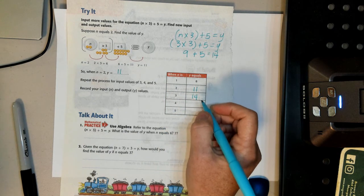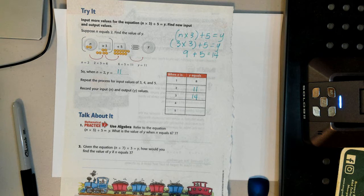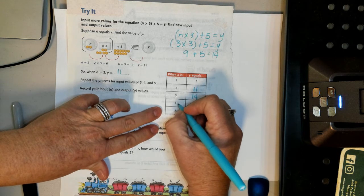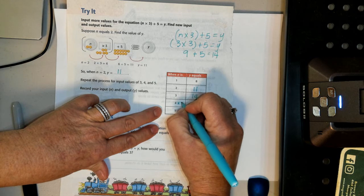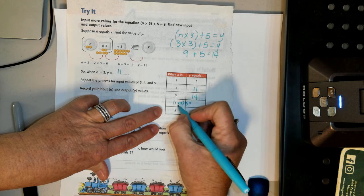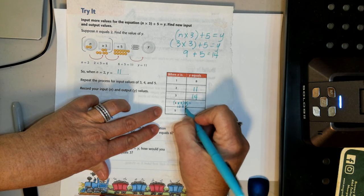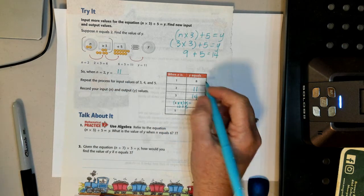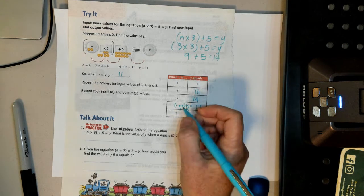4 times 3. You could even just write it here if you want it. 4 times 3 plus 5 equals what? 12 plus 5 equals 17.